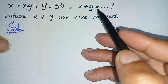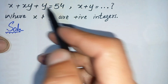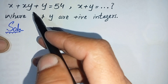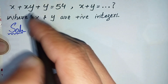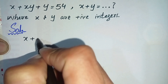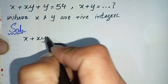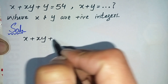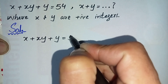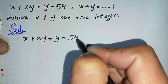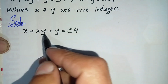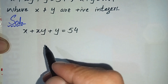To find the value of x + y, we will take the given equation and try to factorize it. The equation is x + xy + y = 54. I will try to factorize the left-hand side of this equation.